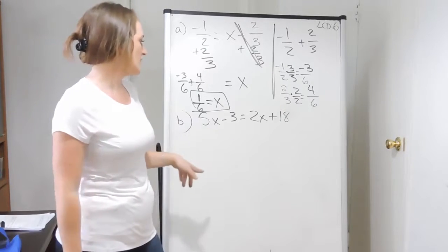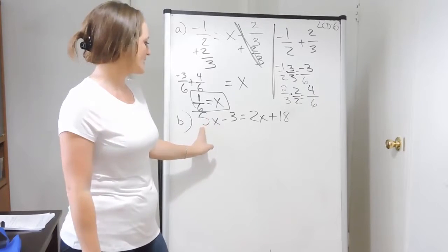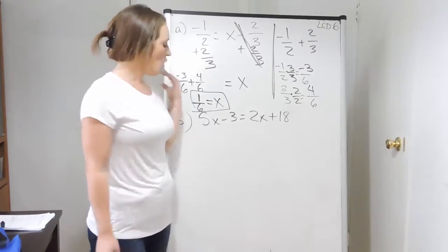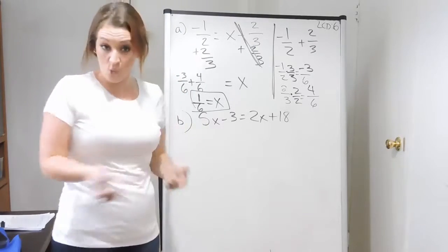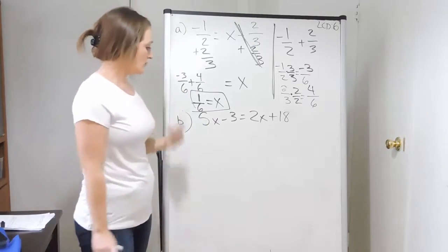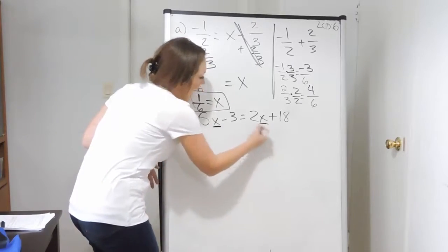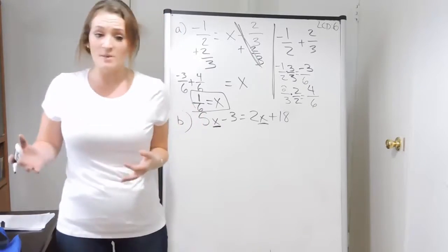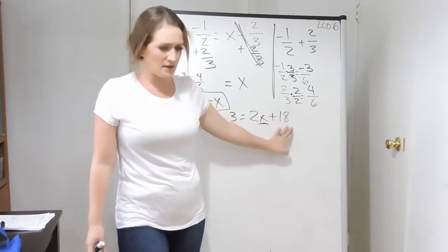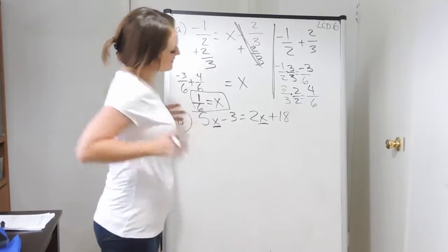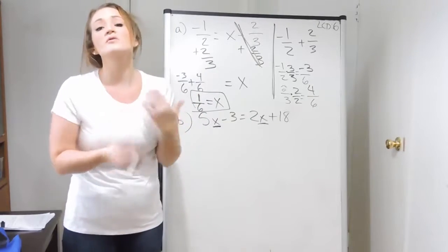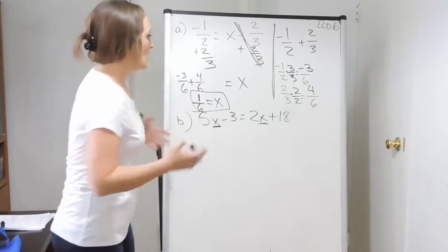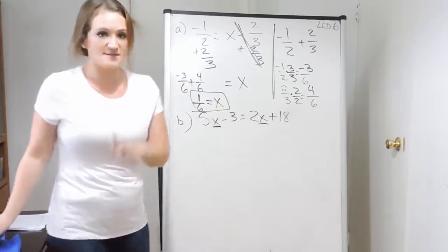So let's look at this equation down here. Here I have five x minus three is equal to two x plus 18. Always focus your attention on where the variable is. For this equation, I have two variables — one on the left and one on the right-hand side. Same thing with my numbers: here I have a negative three, and here I have a plus 18. So when it comes to these kinds of equations, when you're no longer dealing with one-step equations, you might have a few different things going on.